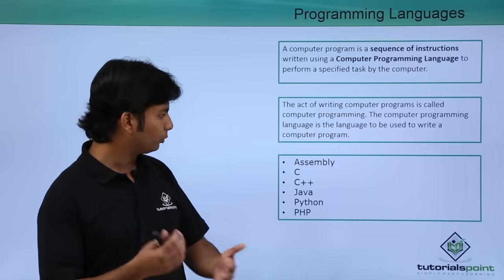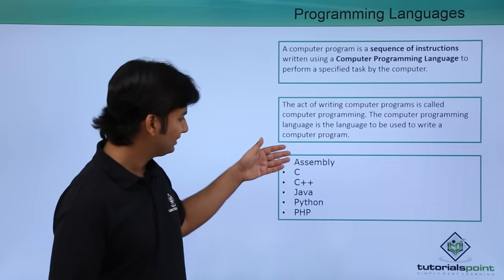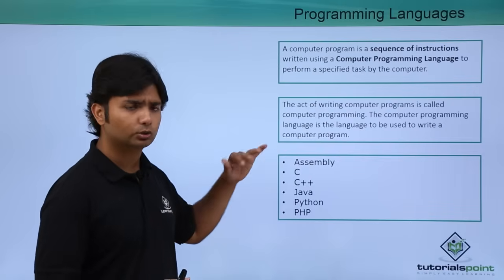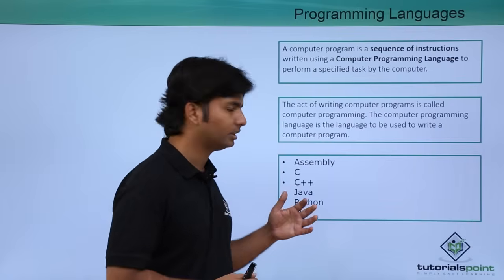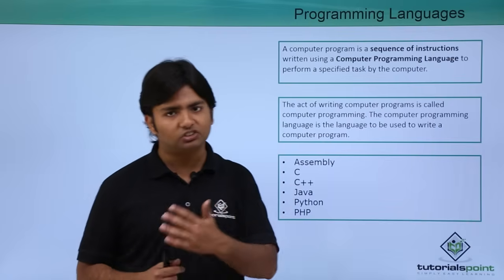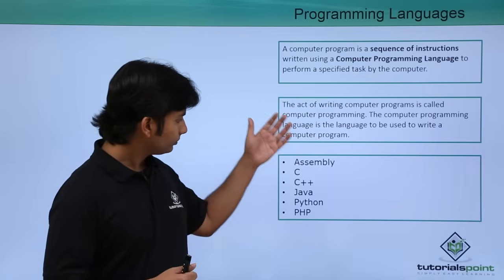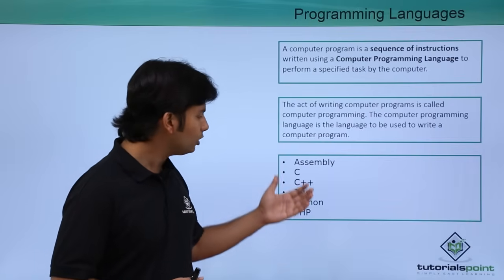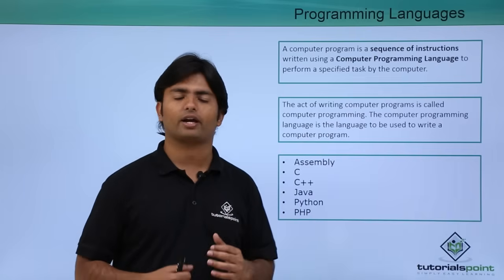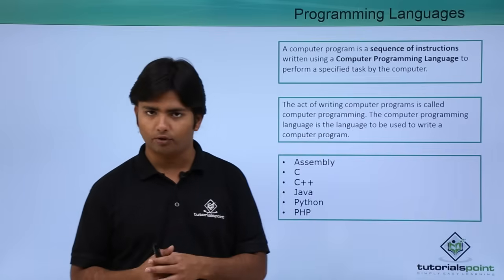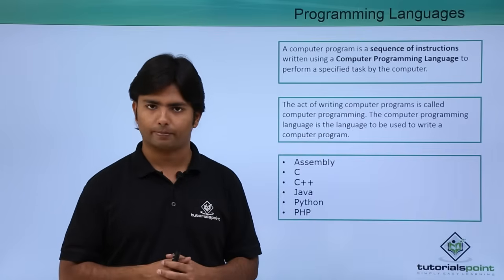A computer programming language is a language which is used to write a computer program. Nowadays, we have a number of languages like C, C++, assembly language, Java, Python, PHP, C Sharp, and many more. Using any of these languages, you can write a program which will communicate with a system.